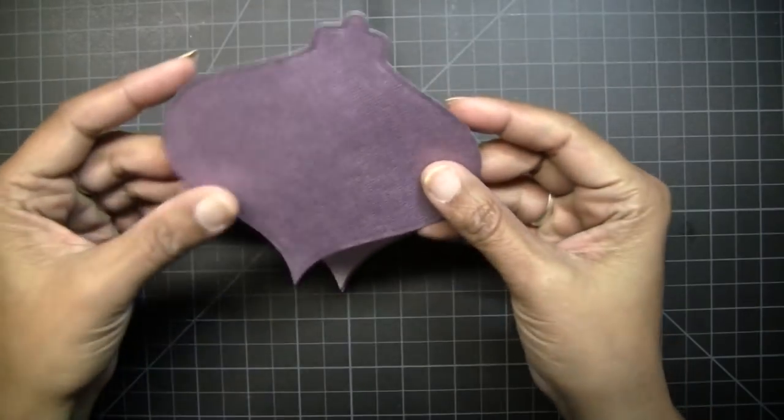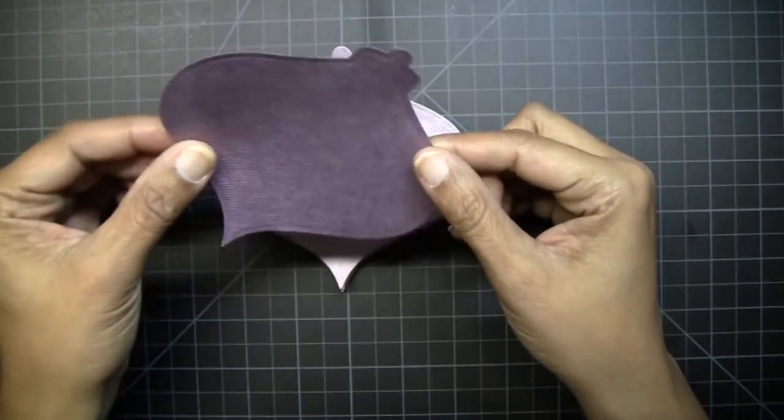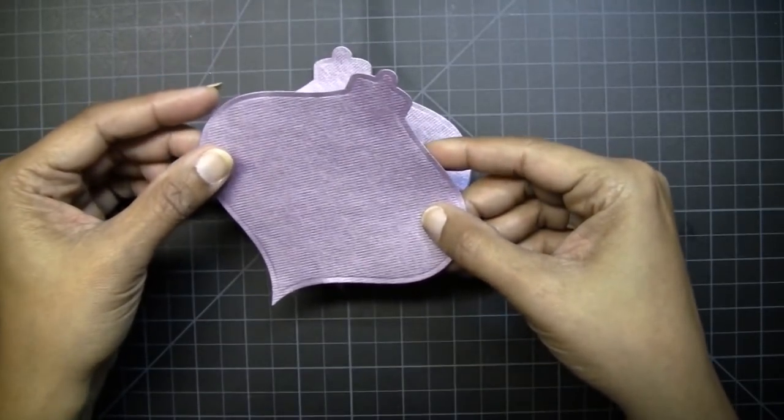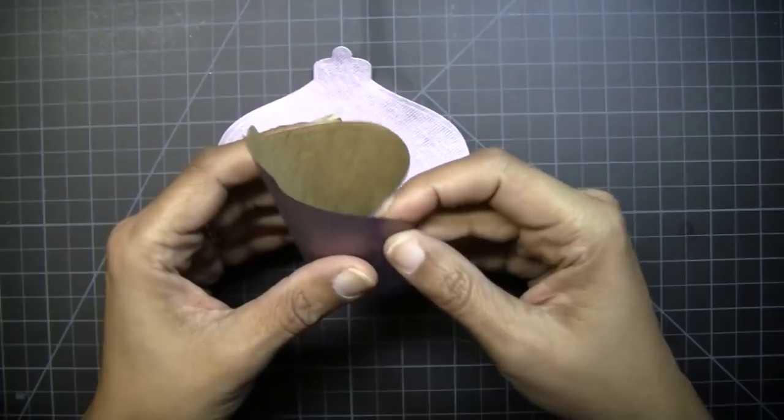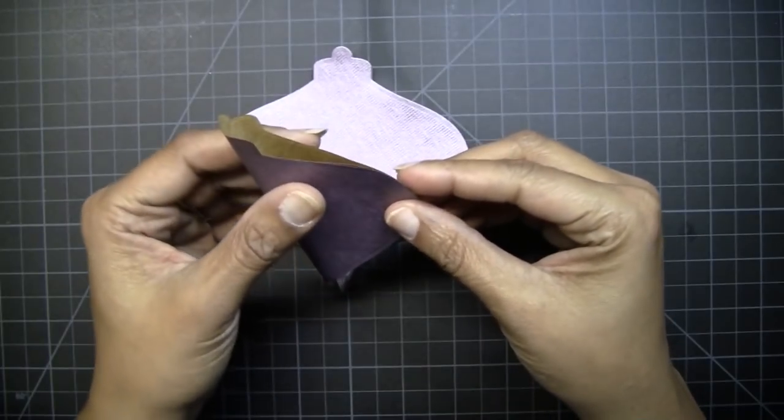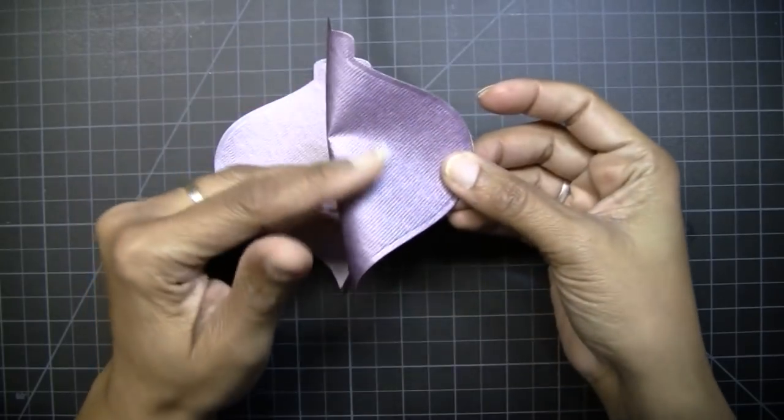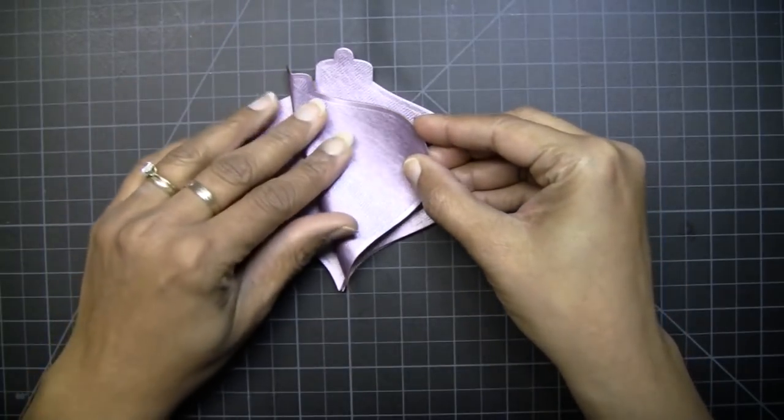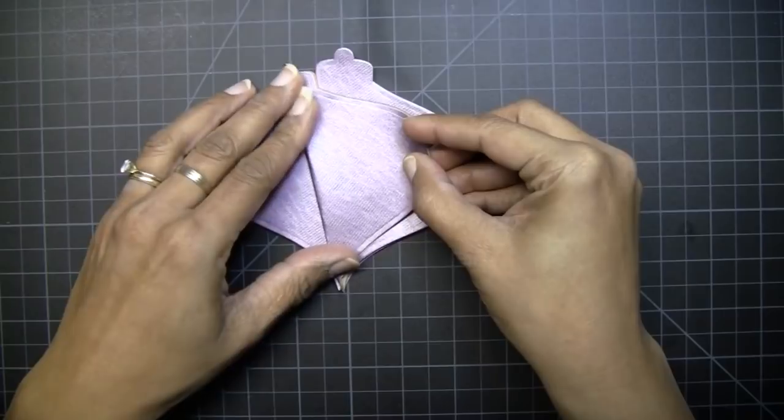When you fold these, if you've used two-sided paper, you'll get a different look depending on the way that you fold them. Whatever color you fold to the outside is going to be your dominant color. So I'm choosing to see this purple and I'll fold each of these exactly in half.